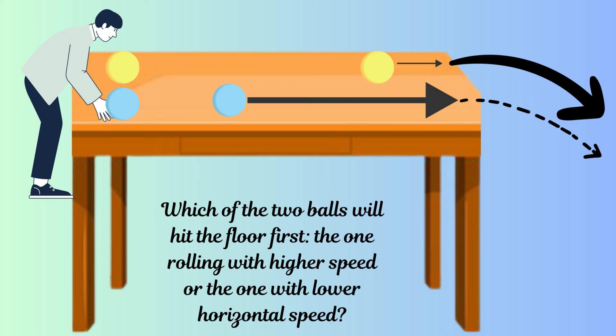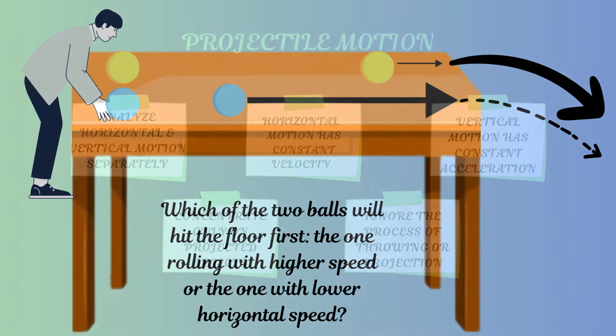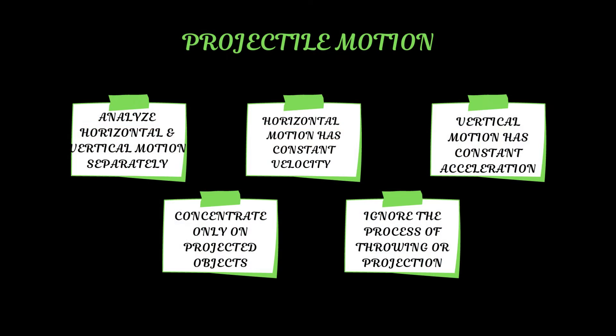But which of the two balls do you think will hit the floor first — the first ball rolled gently, or the second on which you applied a much greater force? You will have to wait for the answer, because you need to learn how to analyze projectile motion. In the last video, we learned that Galileo told us that the horizontal and vertical motion of projectiles can be analyzed separately.